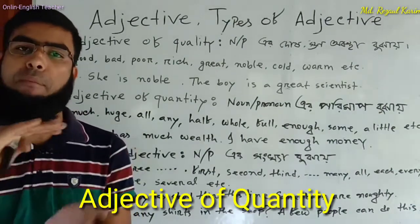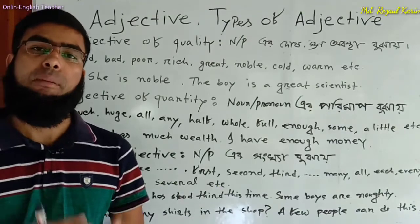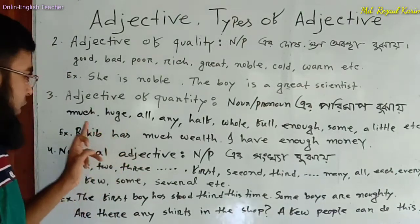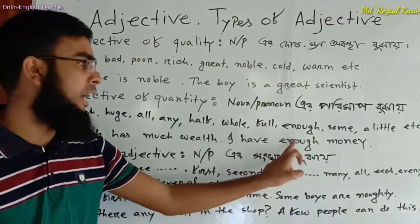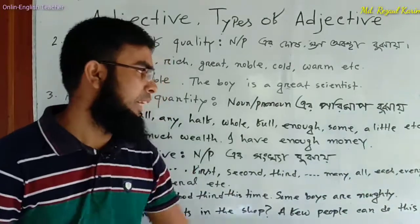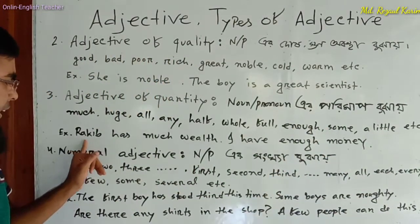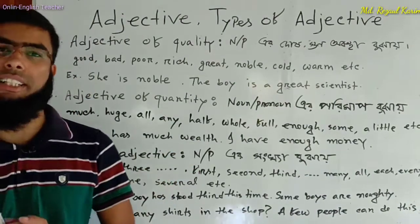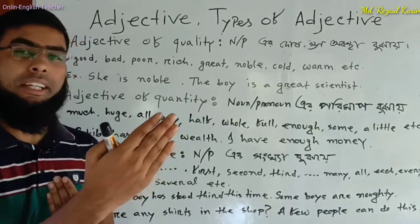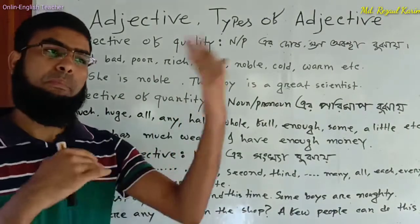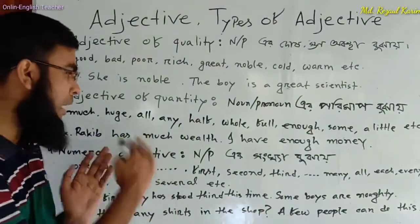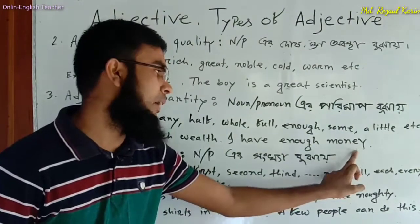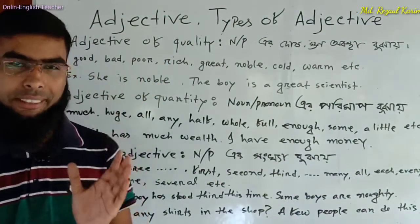Number three is adjective of quantity — it tells us about the amount or quantity of a noun or pronoun. Examples include: much, enough, some, all, any, half, whole, full, a little. For example: Rakib has much wealth. I have enough money — here 'enough' is an adjective of quantity.